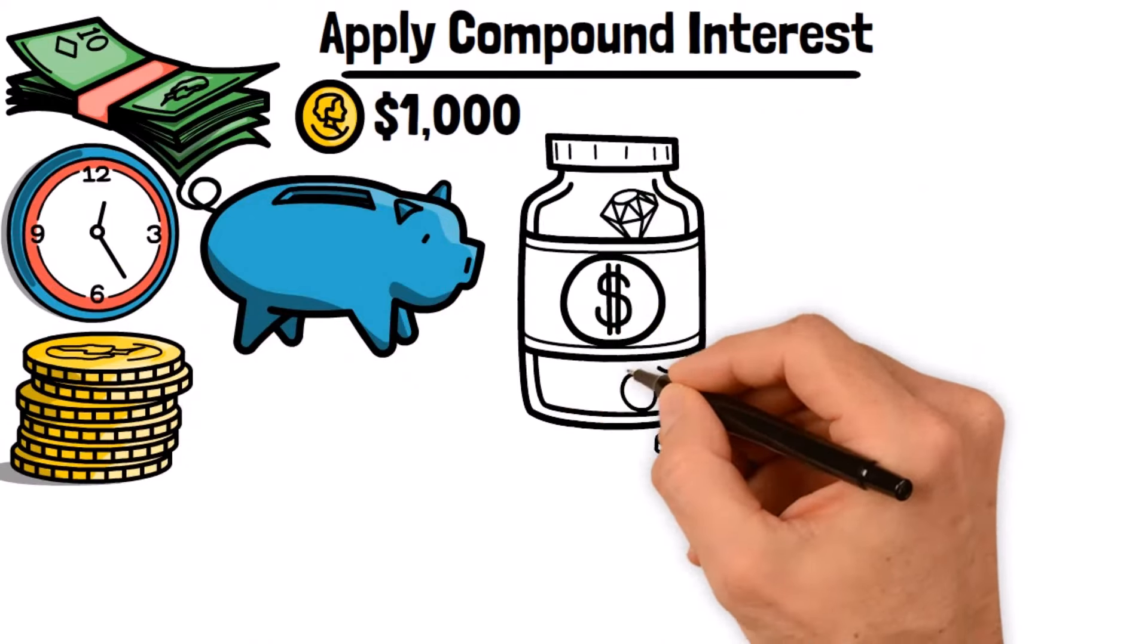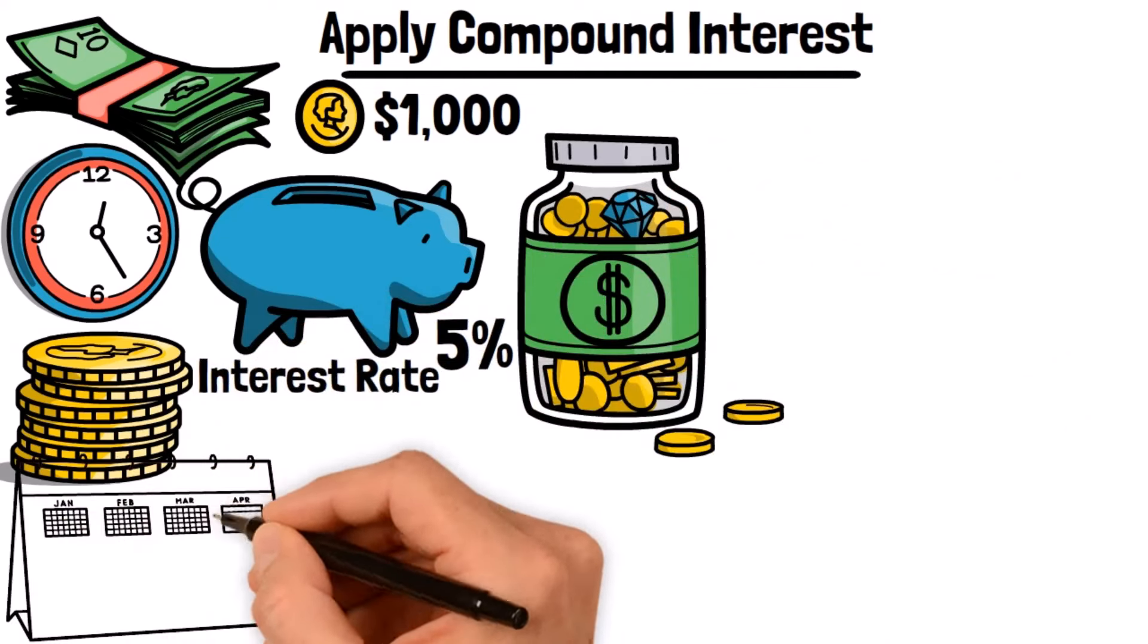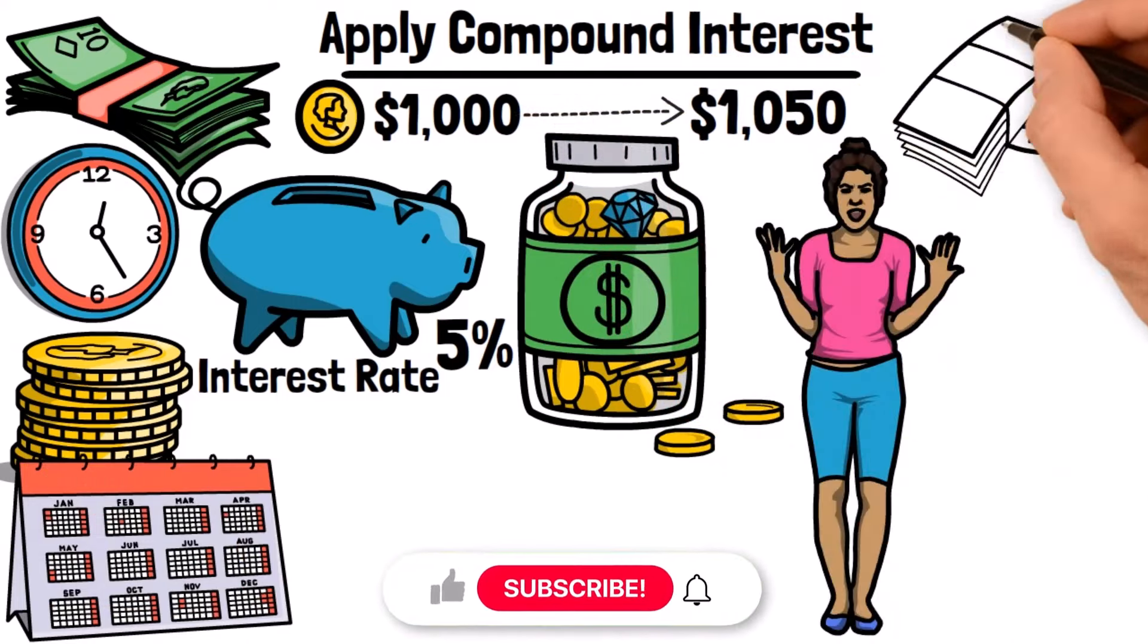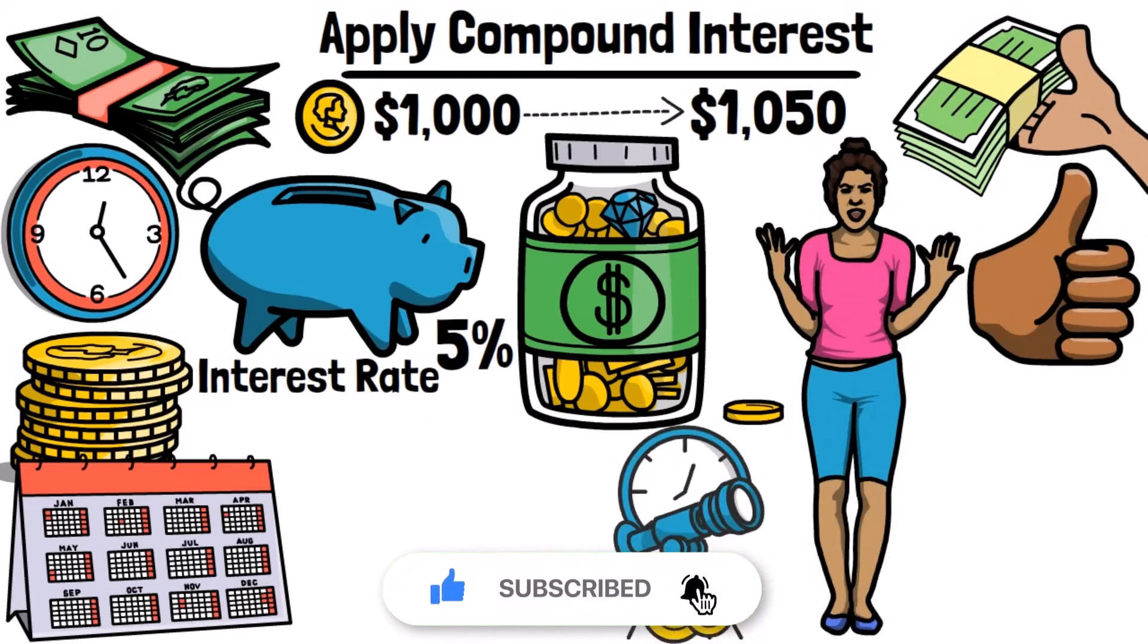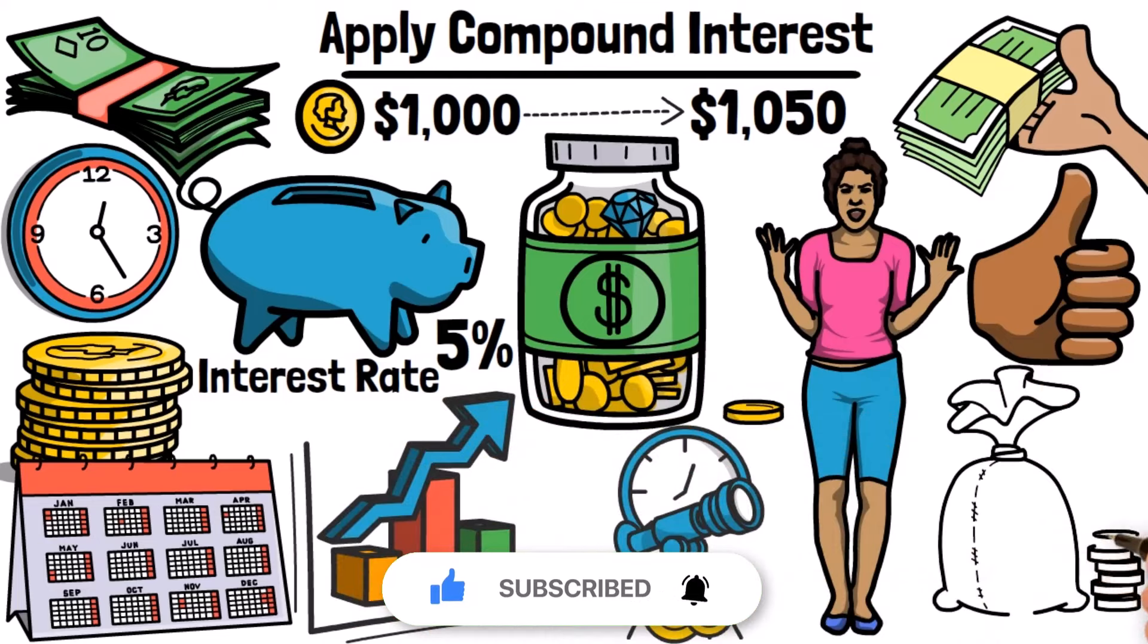Let's say you invest $1,000 in a savings account with an annual interest rate of 5%. After one year with compound interest, your investment would grow to $1,050. But here's where it gets interesting. Instead of withdrawing the interest, you keep it in the account. Over time, your investment will continue growing faster because that interest will also generate more interest.